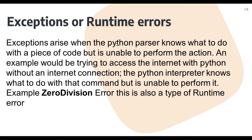An exception arises when the Python parser knows what to do with a piece of code but is unable to perform the action. An example would be trying to access the internet with Python without an internet connection — the interpreter knows the command but cannot perform it. A classic example is the zero division error, which is also a type of runtime error. If a program requires internet connectivity and the user runs it without internet, the error will be generated at runtime since the software doesn't know in advance whether the internet is available.